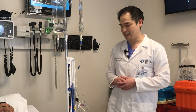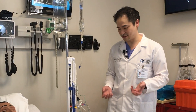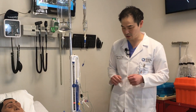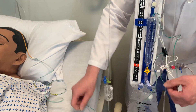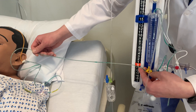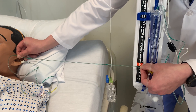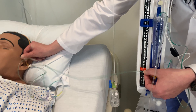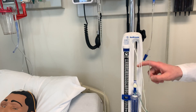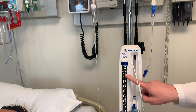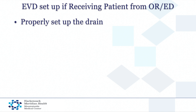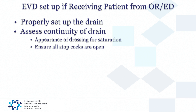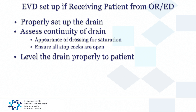The second thing to ensure is that the drain is properly leveled to the patient. When we say to level the drain, this means that the zero point on the drain should match with the patient's tragus on the ear. This can be done in a number of ways. In many instances there will be a laser leveler available to the nurses. Alternatively, you can take the catheter, bring it to the patient's ear, and ensure that it's at zero at a right angle. This is done through centimeters of water measurement.